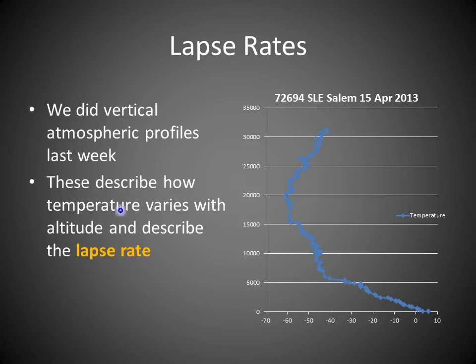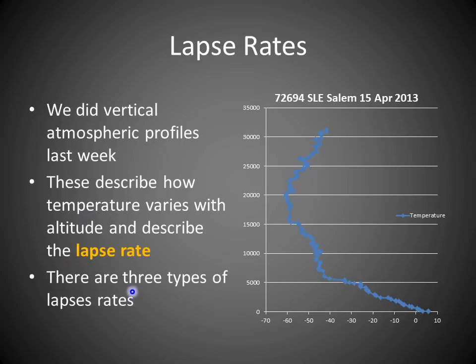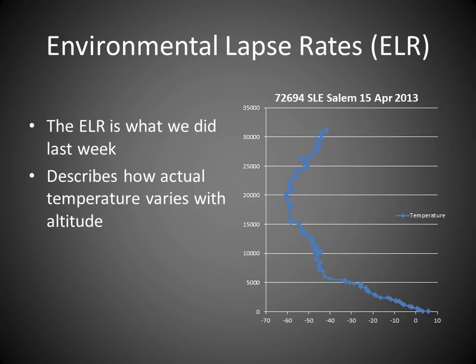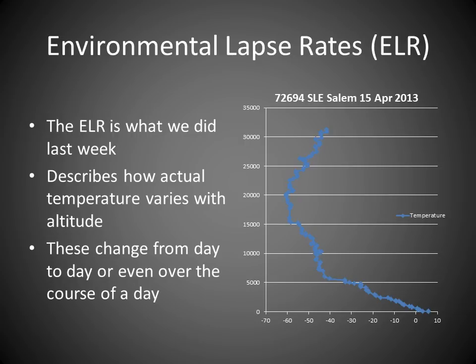These temperature variations are called the lapse rate, and there are three types. The first type is the environmental lapse rate (ELR). This is what we did last week — it describes how actual temperatures vary with altitude. These can change from day to day or even over the course of the day, and can be used to help with prediction.